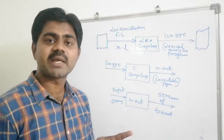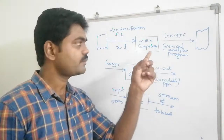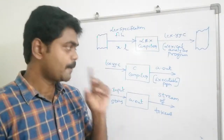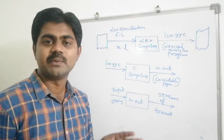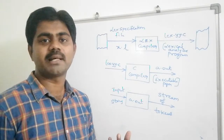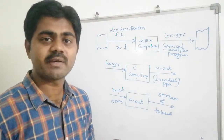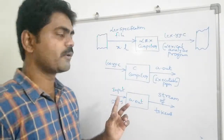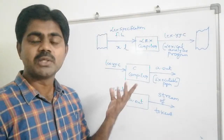First we provide a Lex specification file — x.l — which is given to the Lex compiler, not the C compiler. We get lex.yy.c, which is the lexical analyzer program. That lex.yy.c is then applied to the C compiler, and we get a.out, which is the executable program. For that a.out executable, we provide an input string and we get a stream of tokens. This is a typical simple Lex program.